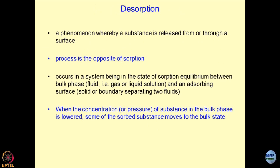Desorption is the reverse process. Desorption is the phenomenon where a substance is released from or through a surface — a cleaning-up process that is opposite to sorption. This type of mechanism occurs once sorption has equilibrated. After getting saturated, the tendency is repulsion — you say no to taking anything more. The desorption process will always start after sorption has occurred and achieved equilibrium. Equilibration is between the fluid phase — gaseous or liquid — and an adsorbing surface, which could be the boundary of two fluids or solids like clay particles.